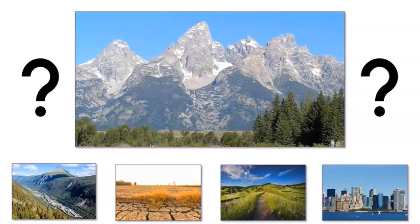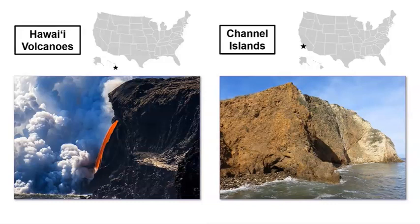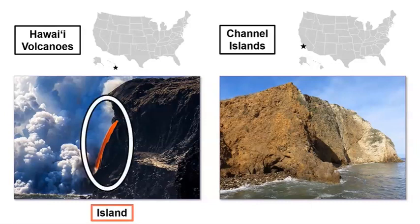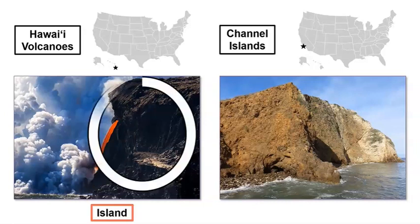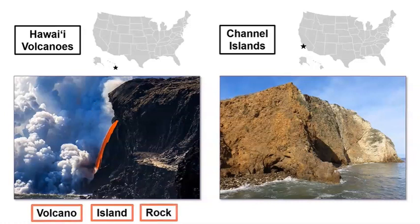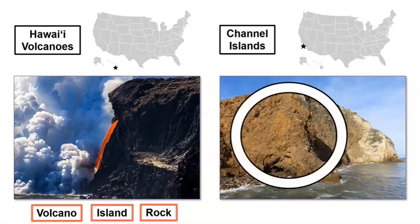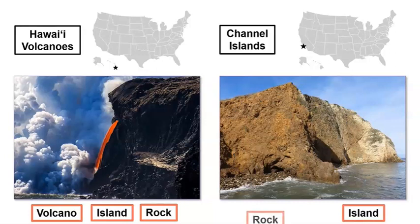Our next stops are Hawaii and California. These two places look like they have land features in common. Let's look more closely at Hawaii Volcanoes National Park in Hawaii. Did you know that Hawaii is an island? What is this orange matter coming out of the rocks? Yes, it is lava! Lava is the material that forms the island. The picture shows lava, so that tall shape must be a volcano. It looks like it is made of rocks. Let's write those features down: volcano and rock. Now let's look at Channel Islands National Park in California. I don't see any lava, so let's call this tall shape a mountain. The mountain is an island and also seems to be made of rock.